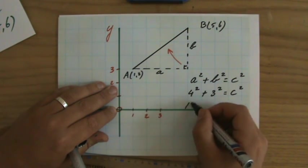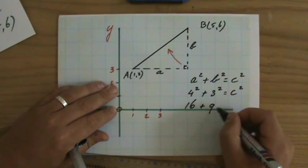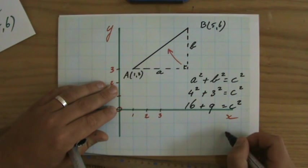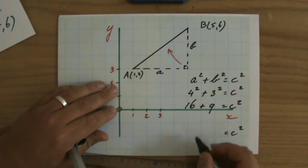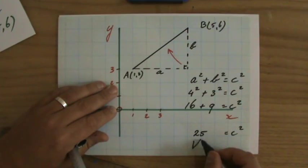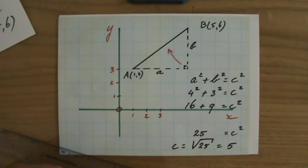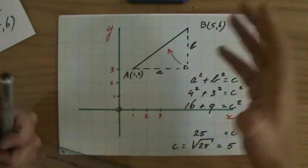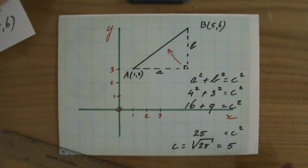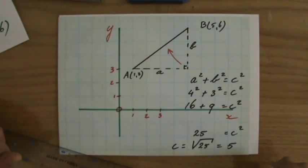So it's just another Pythagoras question. 16 and 9 is C squared. C squared equals 25, so the square root of 25, and that is 5. So actually, the length of the line segment connecting A and B is 5.